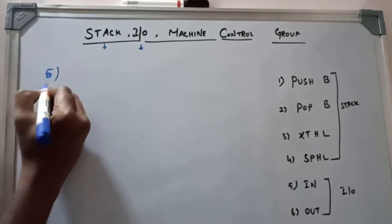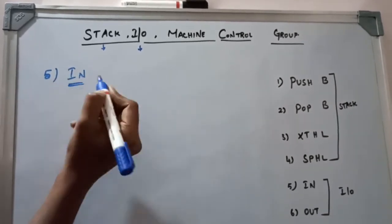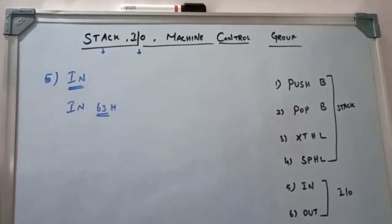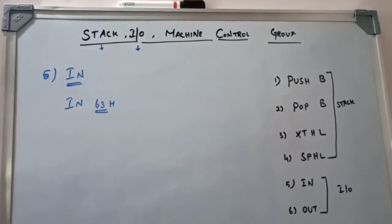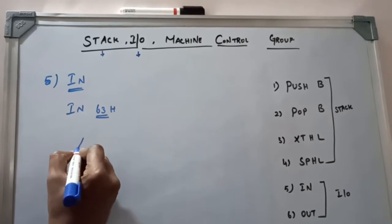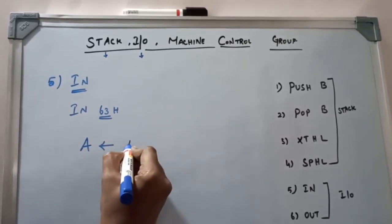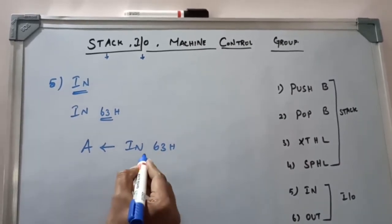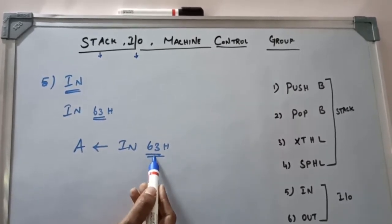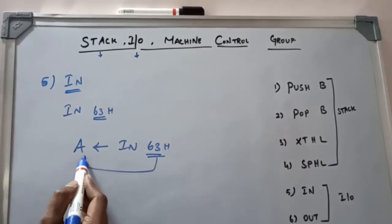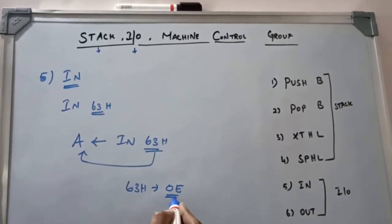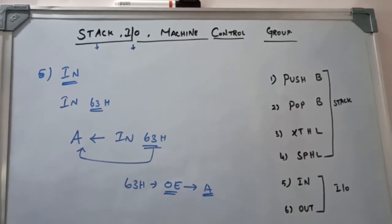The next instruction is IN. You can write it as IN 63H. Here 63H is the address location of the input port. The function is: A ← IN 63H. Whatever data is carried in the input port at address 63H is transferred to the accumulator. For example, if port 63H carries 0E, this value is transferred to the accumulator.